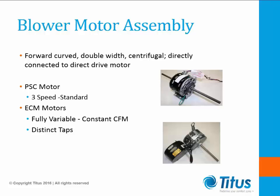ECM motors are also offered. There are two distinct types: a fully variable output motor like what is seen in terminal units, used to provide constant airflow in systems with varying pressure drop. The other ECM option provides an ECM motor with distinct programmed taps that can be programmed to provide different torque outputs, emulating a three-speed PSC motor but at higher efficiency. Fan coils generally provide air flows up to 2,000 CFM at a static pressure of up to a half-inch water gauge. Due to limited static available in fan coils, they are generally applied in single room, single zone applications.